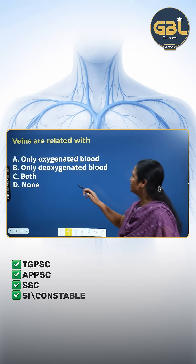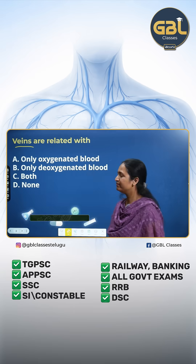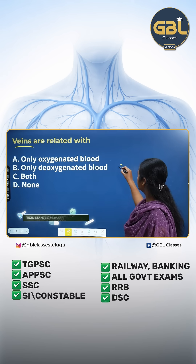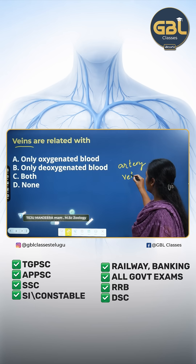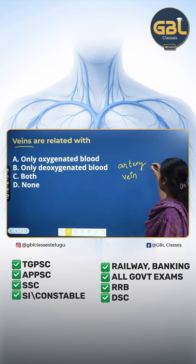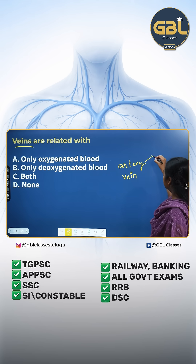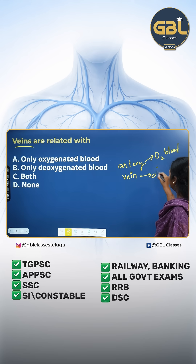Veins are related with... generally we have two blood vessels. The first one will be the artery, the second one will be the vein. Generally what we learn is arteries carry oxygenated blood, veins carry deoxygenated blood.